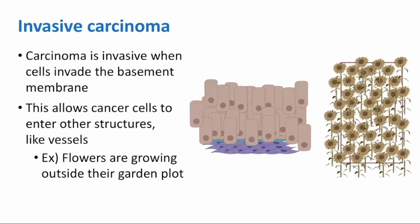Invasive carcinoma is next, when cells invade the bottom border layer, or basement membrane. This allows cancer cells to enter nearby structures, like blood vessels or lymphatic vessels. You can think of this as our flowers, or epithelial cells, beginning to grow outside of the fence of their garden plot, or basement membrane.